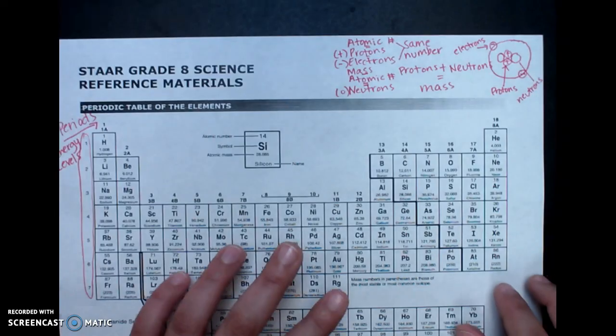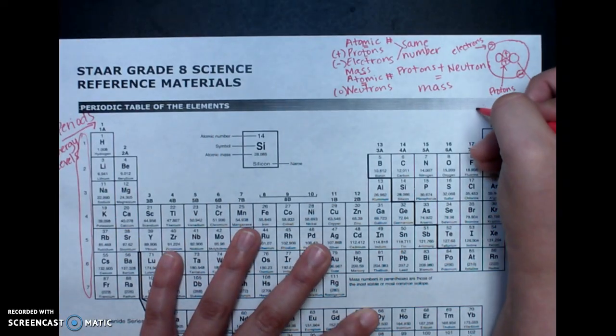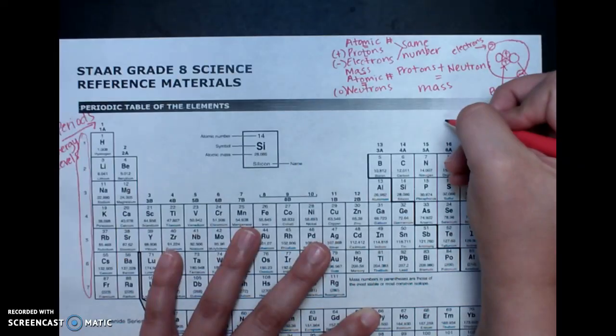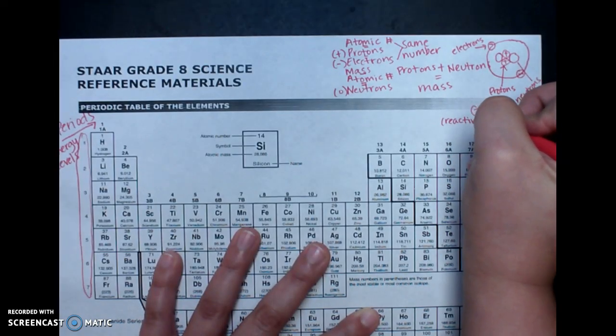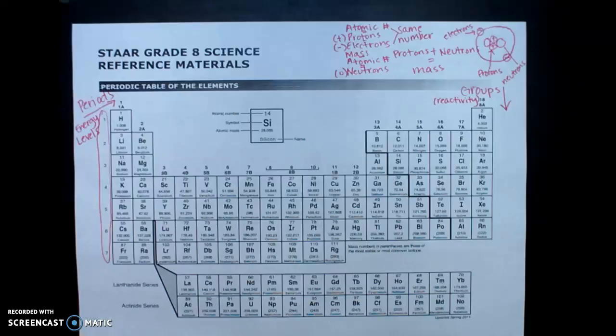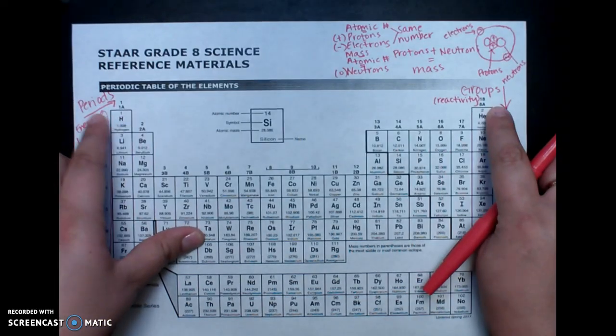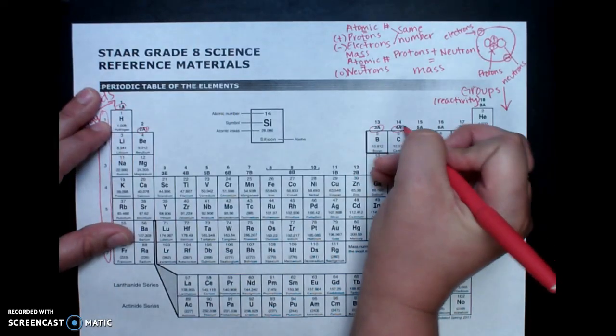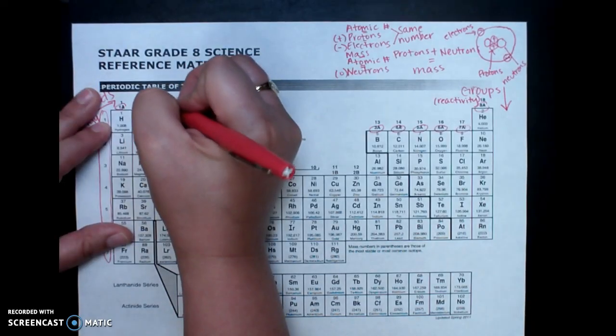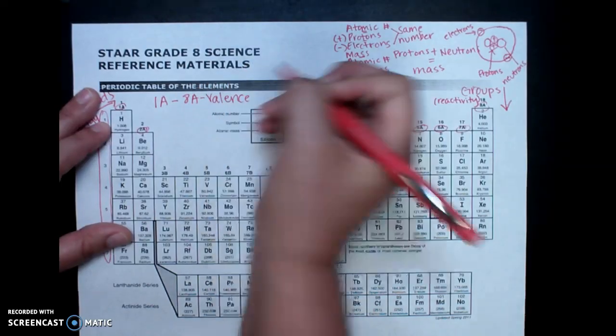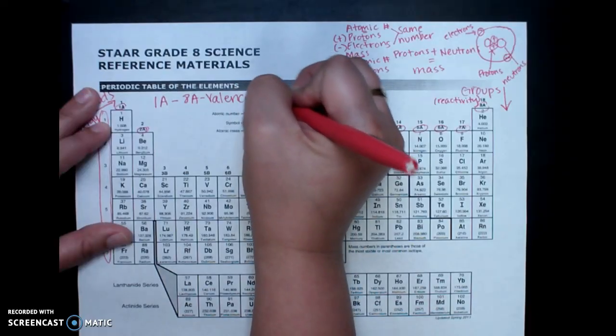Then we have our groups. And our groups have to do with reactivity. And our groups are our columns. And we have 18 total. Okay. And they tell us the reactivity. Now, the groups that I want you to pay special attention to are these ones that have the 1a's on them. Or 1, 2, and then 13 through 18. And you can see the a's. And these are where we're going to focus with our valence electrons. And what 1a through 8a tell us are the valence electrons. The electrons that are in the outermost energy level in each atom.